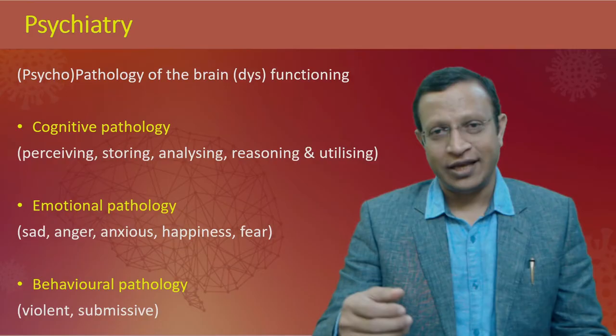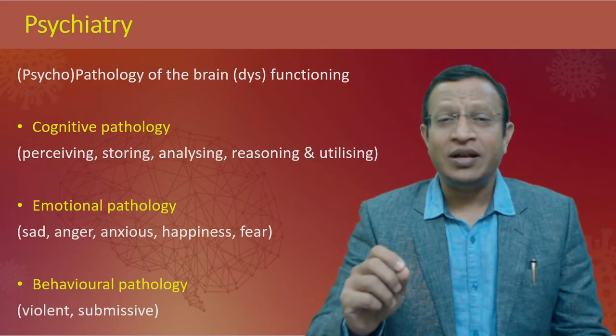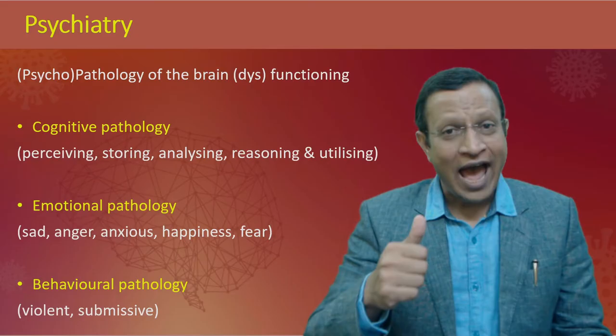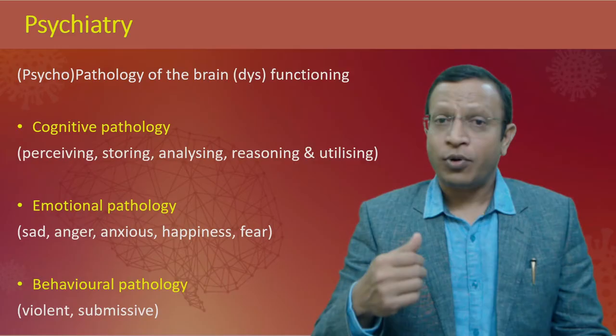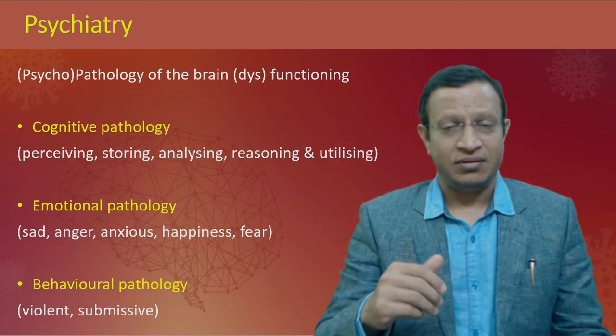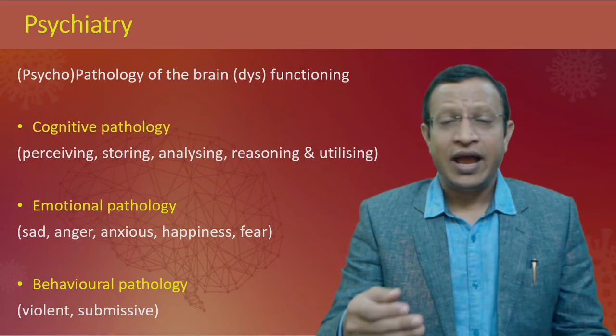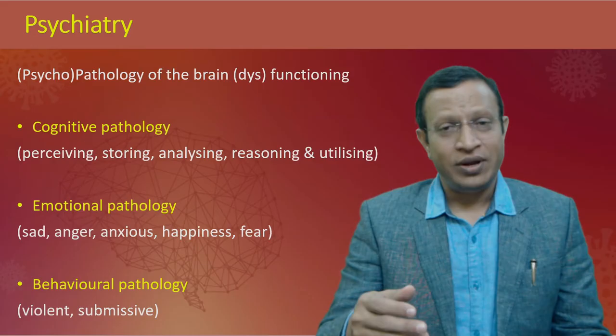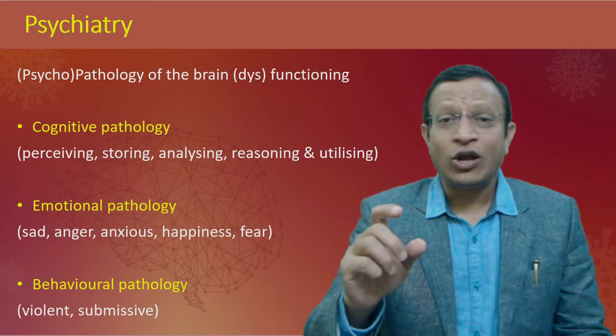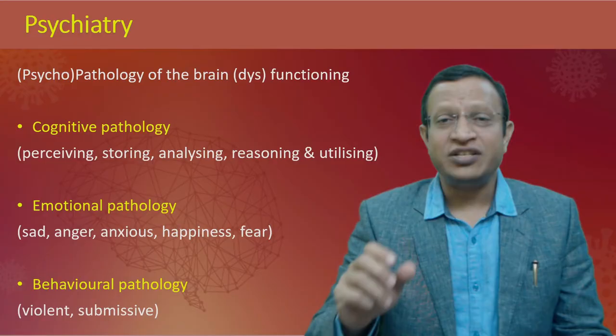It is basically abnormality in the functioning of the brain, abnormality in perception — that is hallucination, illusions, or pseudo-hallucinations. Problems in memory are called amnesia; problems in thinking process include delusions and overvalued ideas. Abnormality in emotions includes depression, mania, and anger; behavioral abnormality includes violence. The whole process of psychiatry revolves around these so-called psychopathologies.